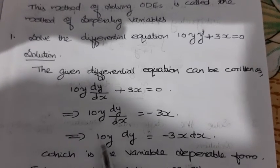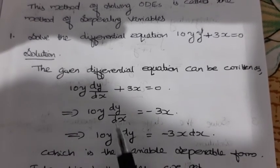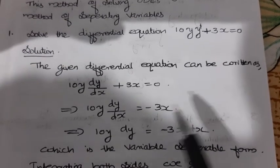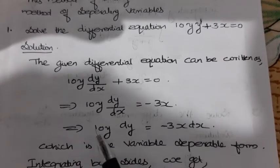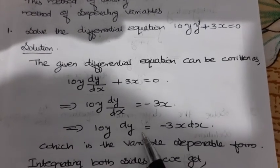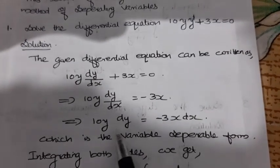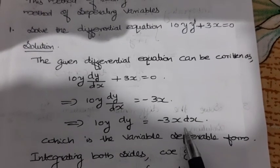That means 10y · dy = −3x · dx. This is a separable formula.